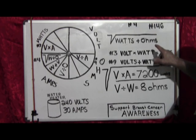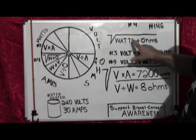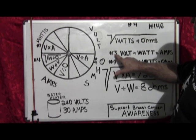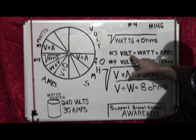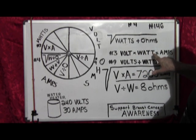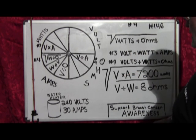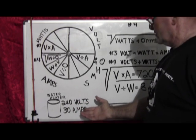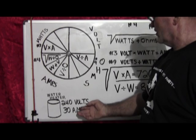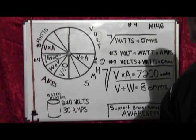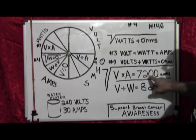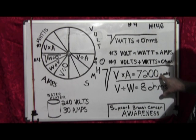Let's start up here with the square root of watts divided by ohms. First we use formula number three, which is volts times amps equals watts. The water heater says 240 volts, 30 amps, so right there volts times amps gives us 7200 watts. Very simple.